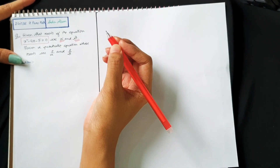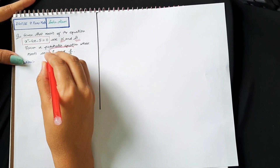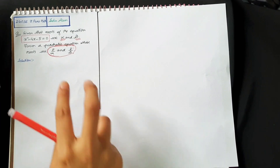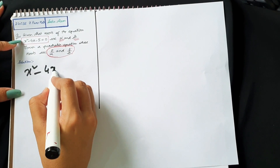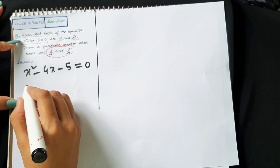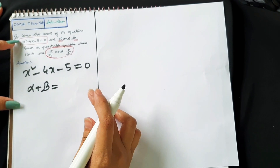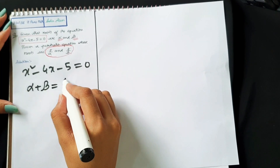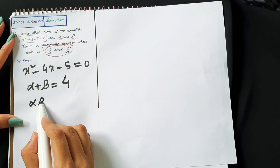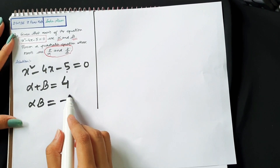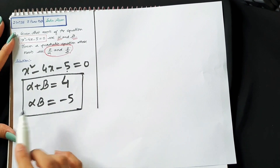Here is the third example. We have a given equation and its roots are alpha and beta. We need to find a new quadratic equation with roots 2/α and 2/β. Even if we already have the new roots, we cannot start the math from there since we don't know the values of alpha and beta. We always start with the given equation. The sum of roots: alpha plus beta equals minus b by a, and b is minus 4, so alpha plus beta equals 4. The product: alpha times beta equals c by a, which is minus 5 divided by 1, so alpha times beta equals minus 5.